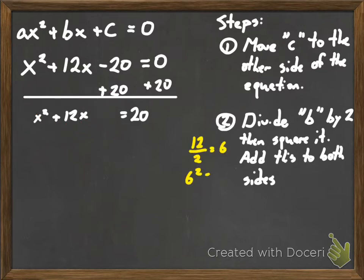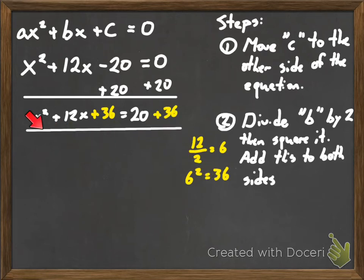What is 12 divided by 2? That's 6. 6 squared is 36. Okay, so I add that to both sides. So I'm going to have 56 on this side of the equation, and then I have this trinomial over here. This is a complete square.